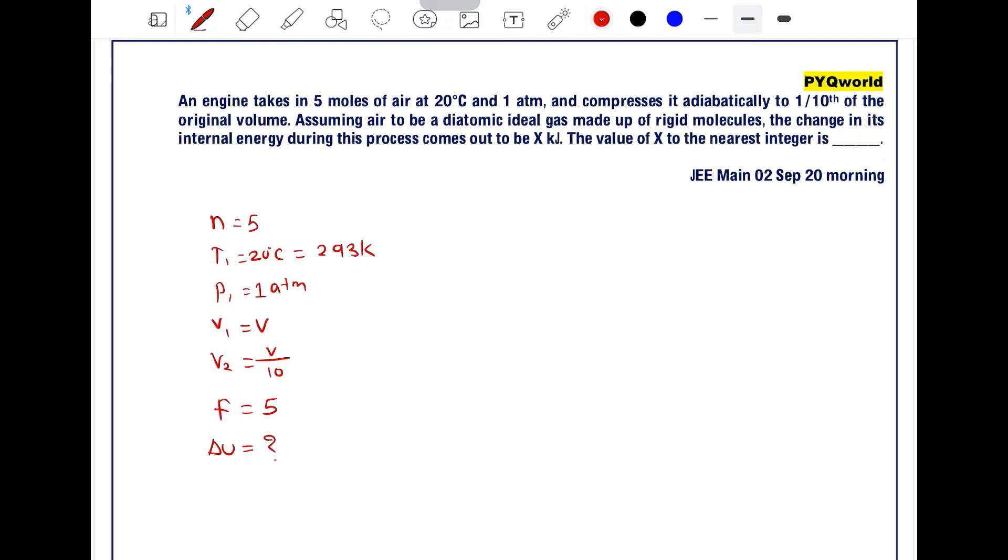What is the formula for delta U? We know delta U equals n Cv delta T, where Cv equals F/2 R, and delta T is the final temperature minus initial temperature.